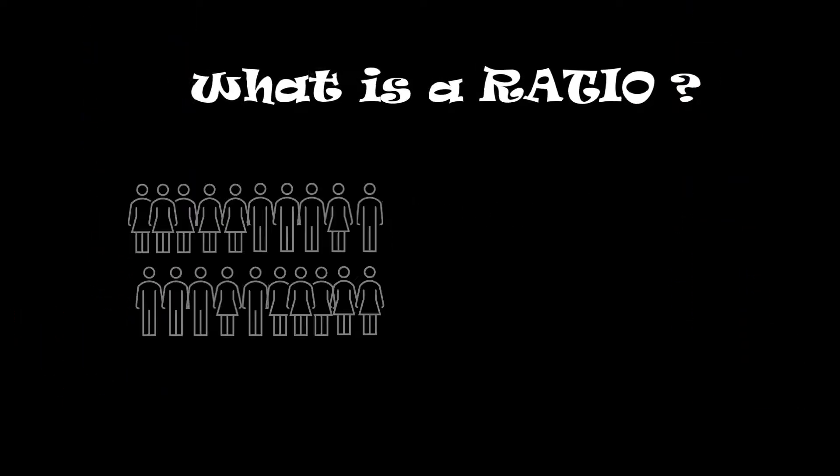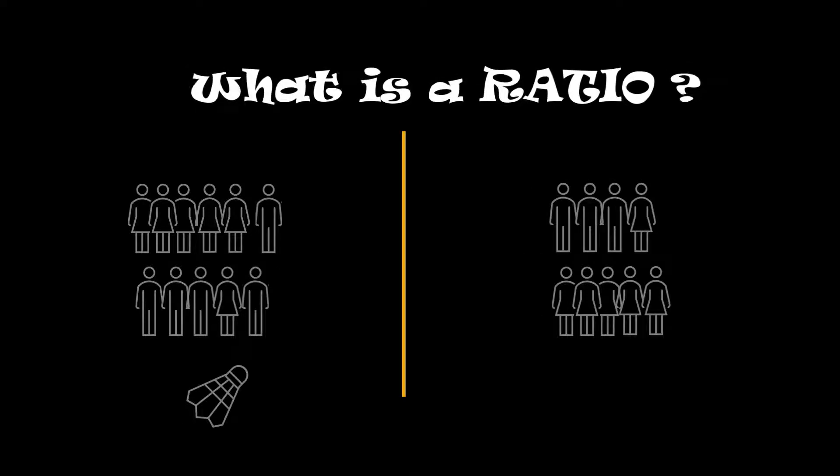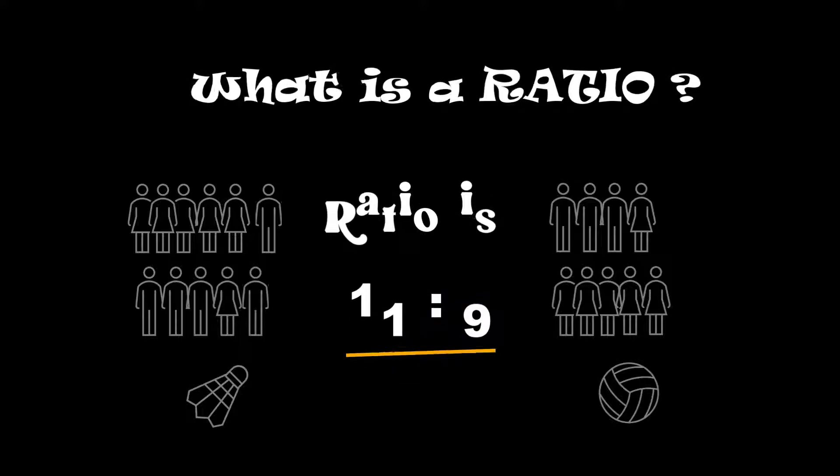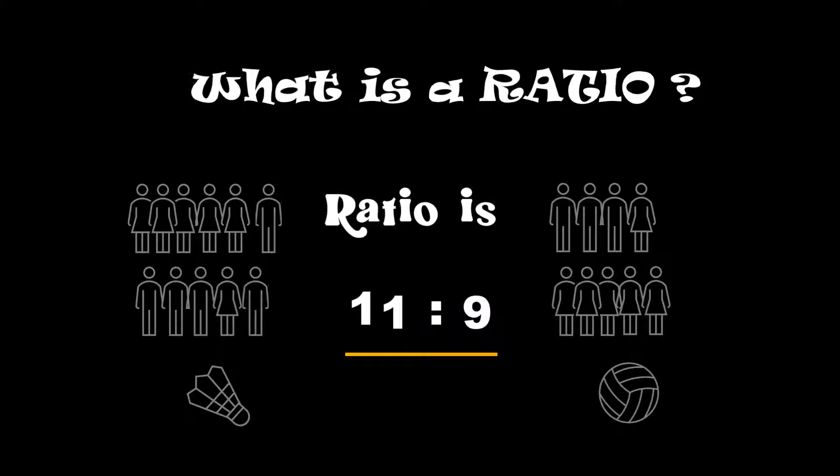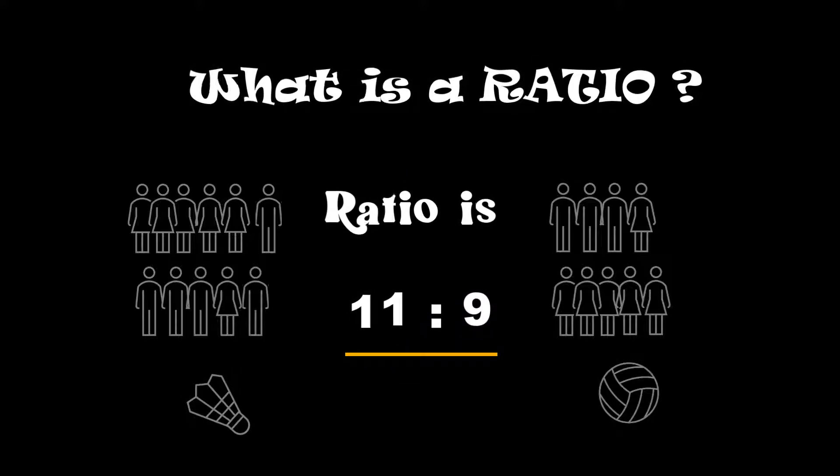Let me give you an example. In a class of 20 students, if 11 of them like to play badminton and 9 students like to play volleyball, then the ratio between them is represented as 11 is to 9.